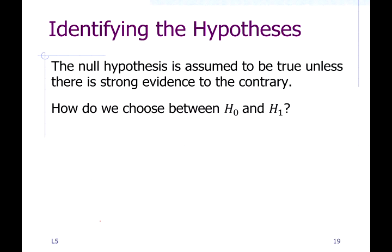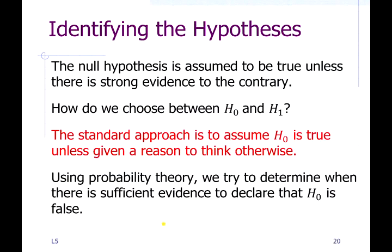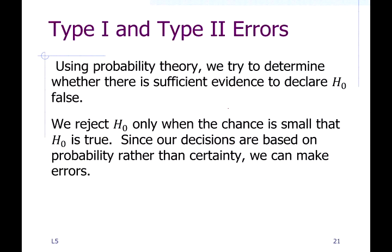How do we choose whether to keep the null hypothesis or reject it and go with the alternate? The standard approach is to assume the null hypothesis is true — that's your default or plan A — unless given a reason to think otherwise. Since this method is probability-based, it is possible to make a mistake, but we'll structure the hypothesis test so that the likelihood of being wrong is very small.